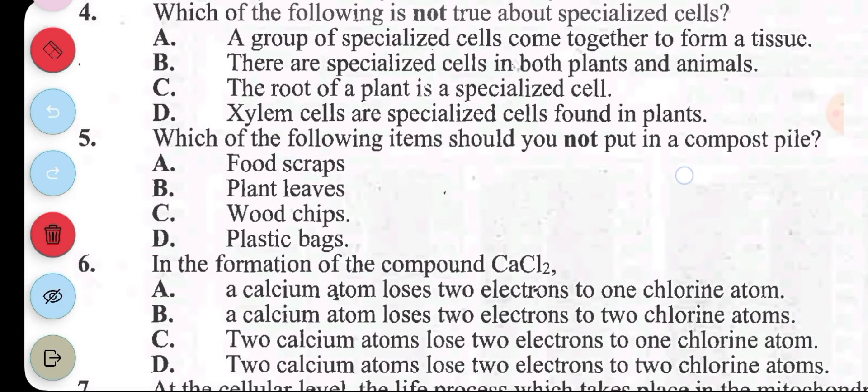Question 6: in the formation of the compound CaCl2 or calcium chloride, A, a calcium atom loses 2 electrons to 1 chlorine atom. B, a calcium atom loses 2 electrons to 2 chlorine atoms. C, 2 calcium atoms lose 2 electrons to 1 chlorine atom. D, 2 calcium atoms lose 2 electrons to 2 chlorine atoms. The correct answer to question 6 is B, because you just have 1 calcium atom losing 2 electrons to 2 chlorine atoms. Each of the chlorine atoms picks up 1 of the electrons. The answer is B.